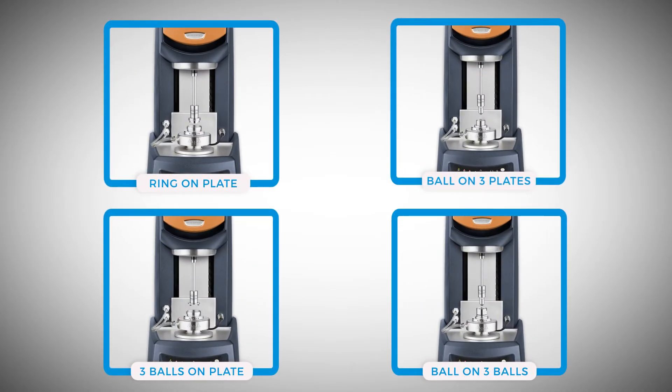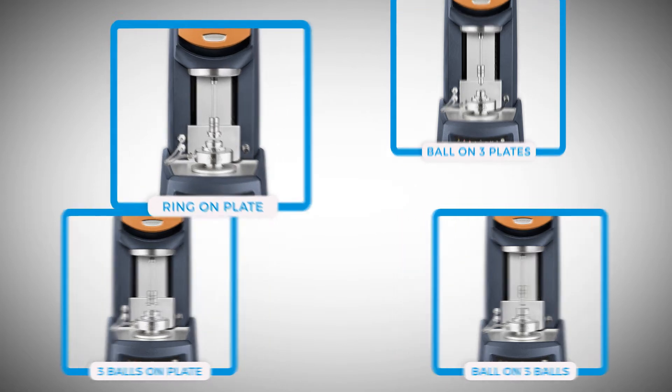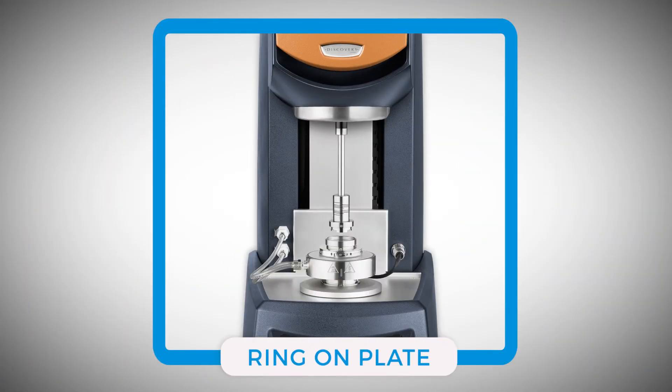TA Instruments' Discovery Hybrid Rheometer is equipped with four different types of Tribological Rheometry accessories. Among them, this Ring-on Plate Geometry provides a surface-to-surface contact and it is commonly used in personal care, food, or electronic industries for surface friction measurements.